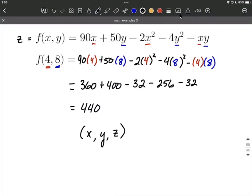So in our case, we had x was a 4, y was 8, and that worked out equaling 440 is a z value.